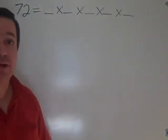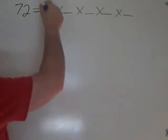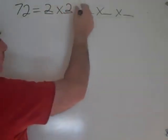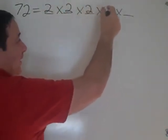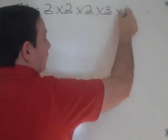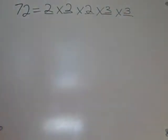Now, 2 and 3 are prime numbers. 2 times 2 is 4, times 2 is 8, times 3 is 24, times 3 is 72.